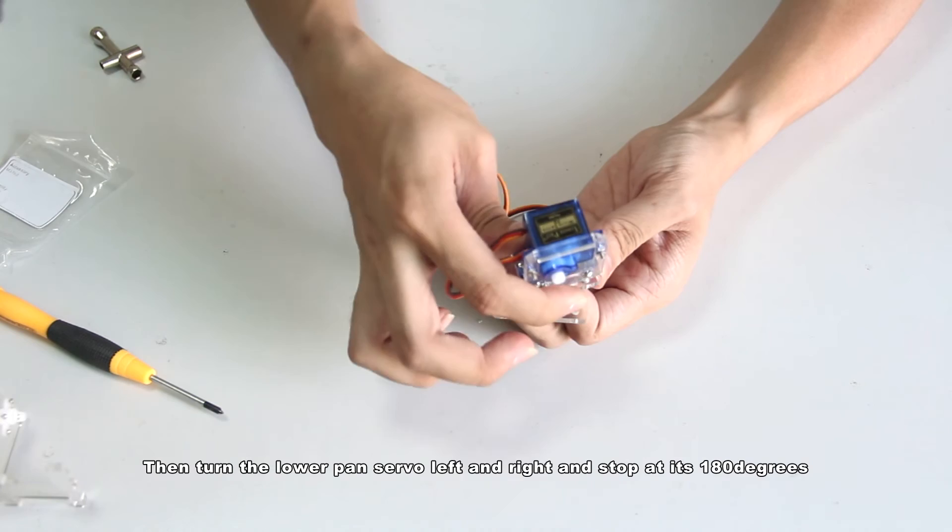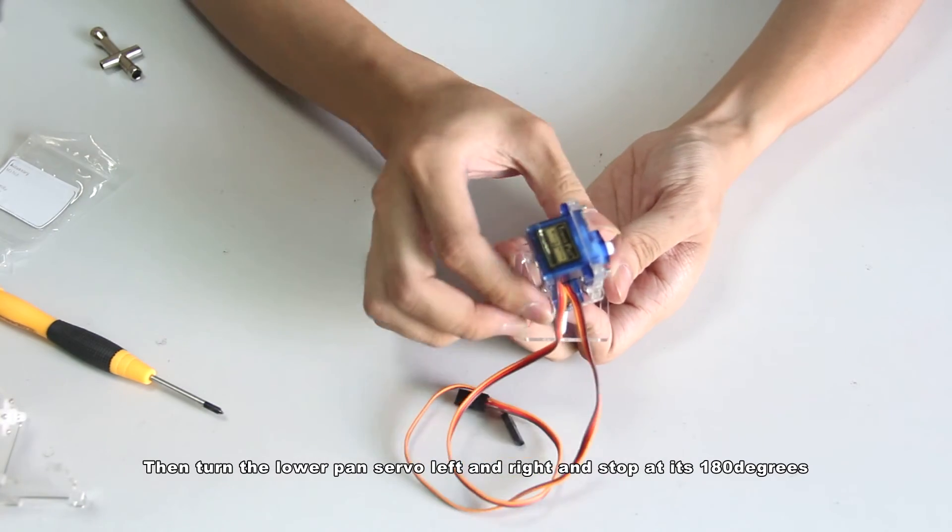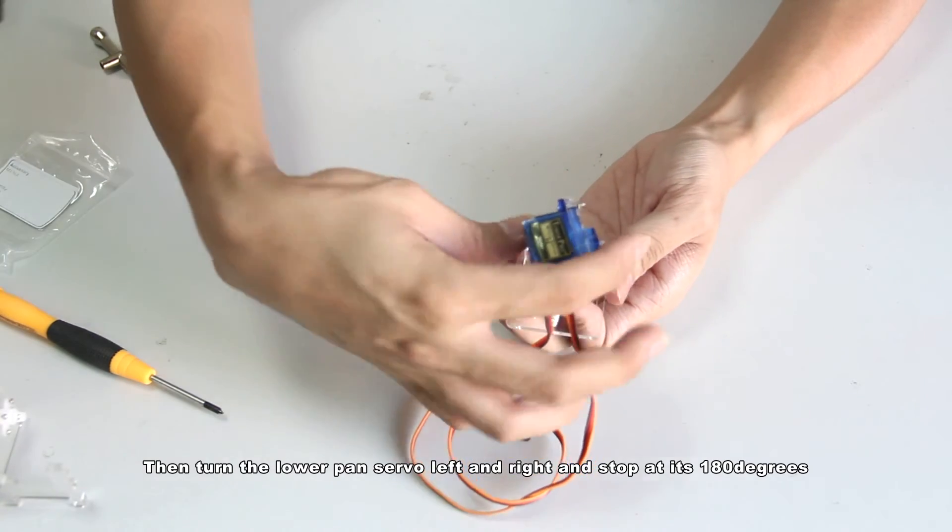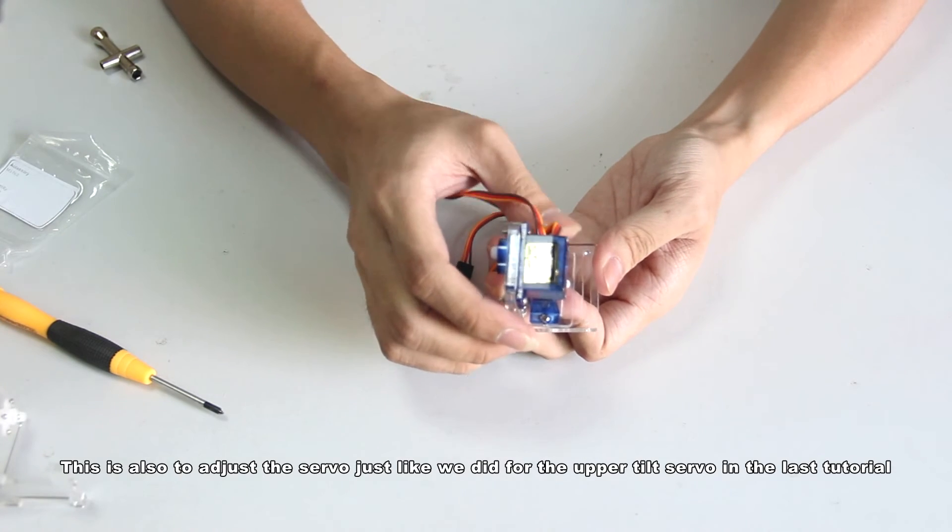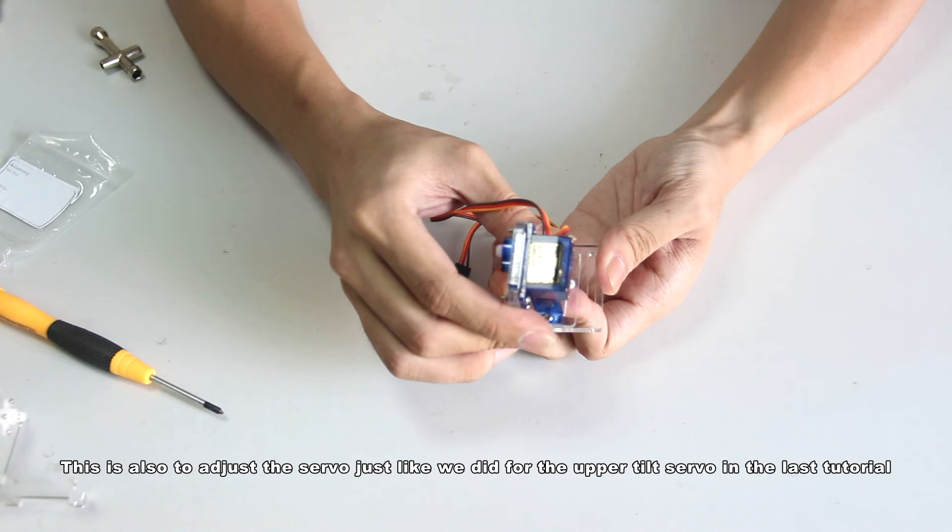Then turn the lower pan servo left and right and stop at its 180 degrees, which is the rightmost angle. This is also to adjust the servo, just like we did for the upper tilt servo in the last tutorial.